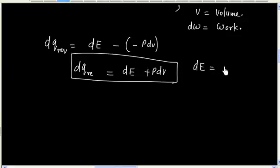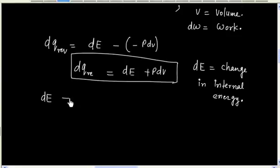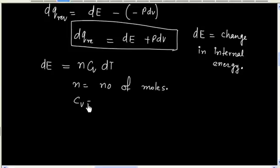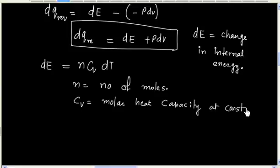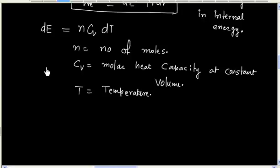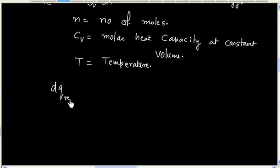In this formula, dE denotes change in internal energy. Change in internal energy is given by nCv dT, where n is the number of moles and Cv is the molar heat capacity at constant volume and T denotes temperature. So this expression becomes dQ reversible equals nCv dT plus P dV.